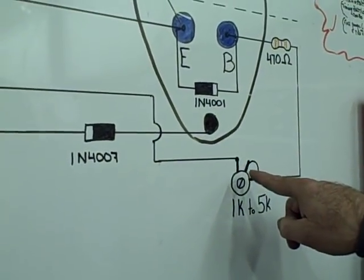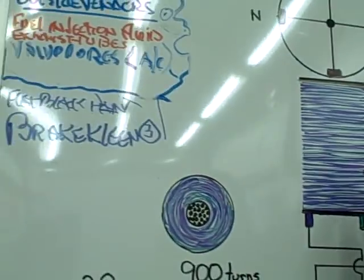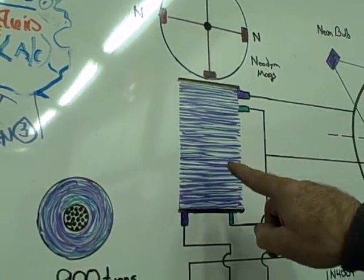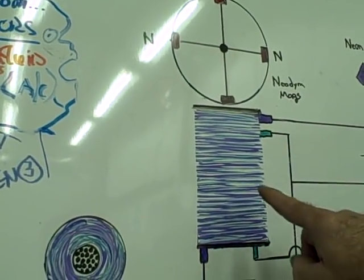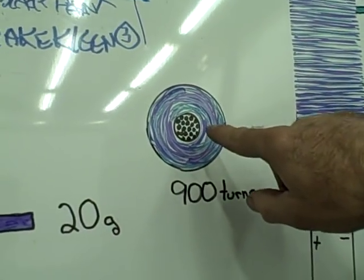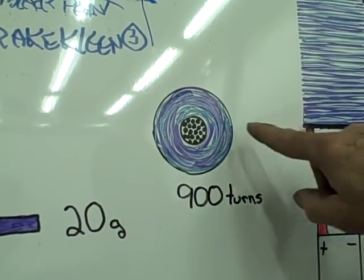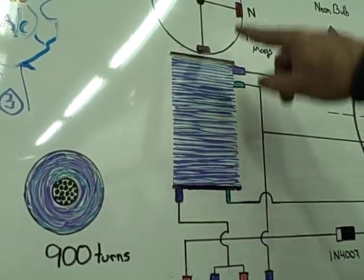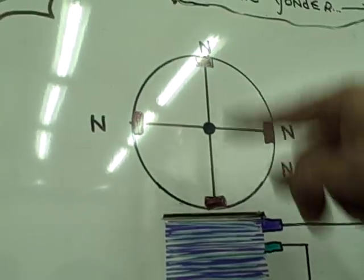And then of course the other wire is going to come off and eventually go to the other end of that 1K potentiometer. Now the coil is basically 900 turns of 20 gauge and 24 gauge wire, and in the center you've got an iron soft core which is usually welding rods or small little rods that are epoxied together in the very middle of this guy.